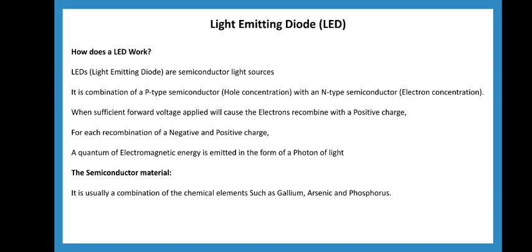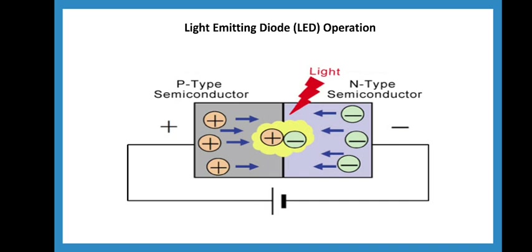What type of semiconductor material is used? It is a combination of gallium, arsenic, and phosphorus. That is why we choose this semiconductor material — to be able to produce light.